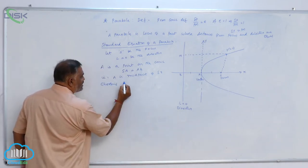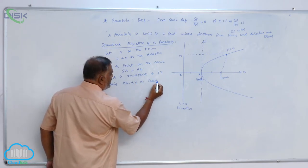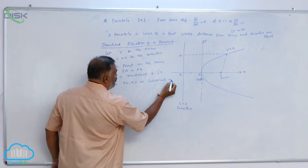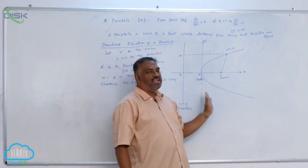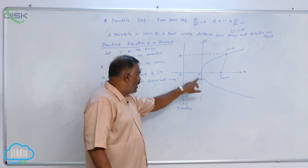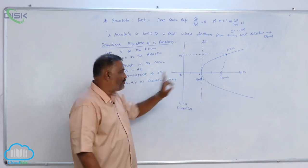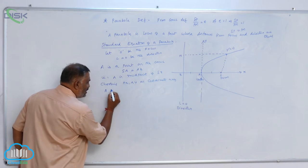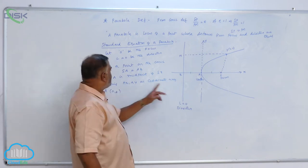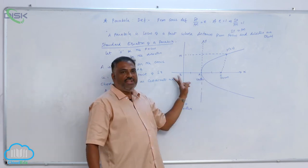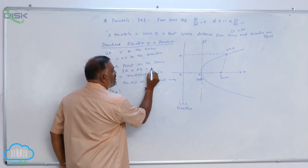Choosing Ax and Ay as coordinate axes, the moment you choose Ax comma Ay as coordinate axes, obviously the vertex A becomes (0, 0). Now, SA equals AZ — assume both equal some length a. So A is at (0, 0), and since it is on the x-axis at a distance of a units on the positive side, S becomes (a, 0). Z is on the negative side of the x-axis.